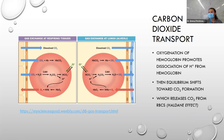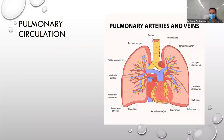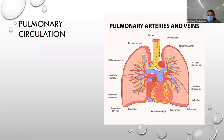Pulmonary circulation anatomy: trachea divides into bronchi, with the left and right pulmonary arteries supplying each side. The lobar bronchi divide into upper, middle, and lower lobes. The key terms: trachea, bronchus, upper/middle/lower lobar bronchus. Overall, pulmonary circulation is a low-resistance, high-compliance system.